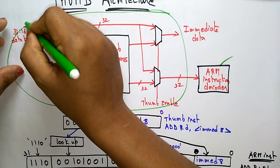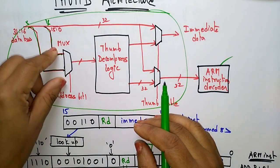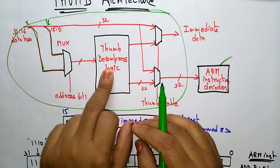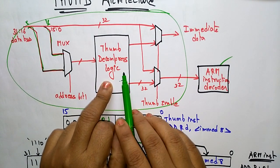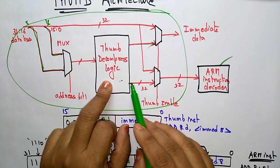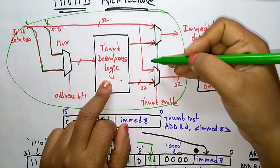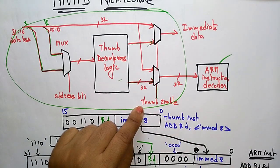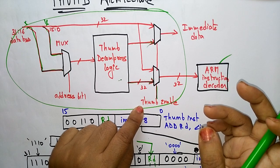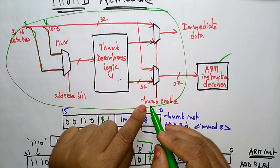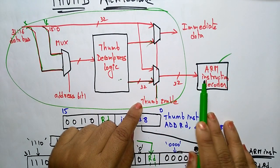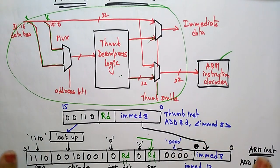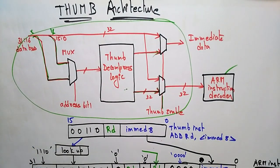Bits 31 to 16 are connected to one end of the multiplexer, and bits 15 to 0 — another 16 bits — are connected to the other end of the multiplexer. Whatever operation the multiplexer performs, that converted data is sent to the Thumb decompress logic, which executes the instruction as fast as it can. When Thumb is enabled — via the T-bit connected to the CPSR — the processor identifies that Thumb is enabled. Whenever this bit is 1, it takes the immediate data, sends it to the ARM instruction decoder, decodes the instruction into binary bits. This is an overview of the Thumb architecture.